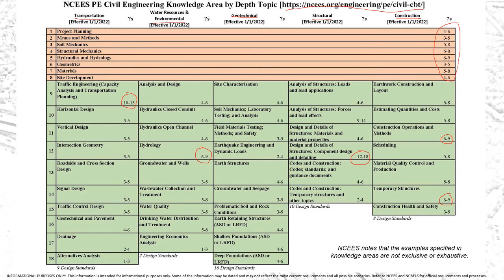Also listed here are the number of design standards — essentially the references you'll need to be familiar with. This ranges from a high of 16 design standards in geotechnical to a low of two in water resources and environmental. If you're unsure which depth to choose, look at these design standards. The depth topic with the most standards you're already familiar with is likely your best choice. If you're unfamiliar with any standards in a given area, that may not be the right discipline for you.